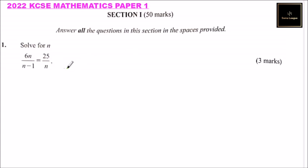We have solve for n: 6n over n minus 1 is equal to 25 divided by n. Now for us to be able to do this we need to cross multiply.